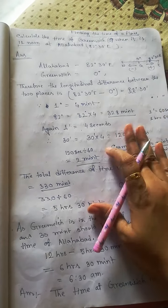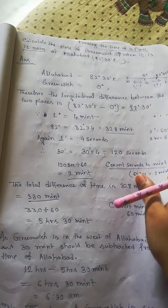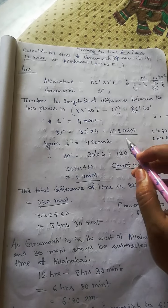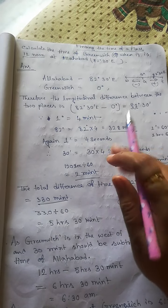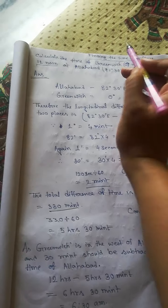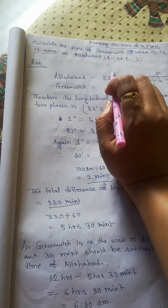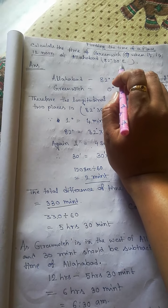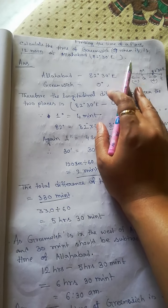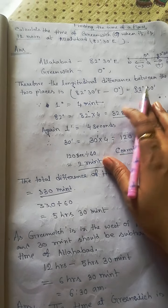Now here we calculate the time of a place. For example, calculate the time of Greenwich when it is 12 noon at Allahabad. Greenwich longitude is zero degree — Greenwich is located at zero degrees — and Allahabad longitude is 82 degrees 30 minutes east. First of all, you find the longitudinal difference by subtraction between the two places.